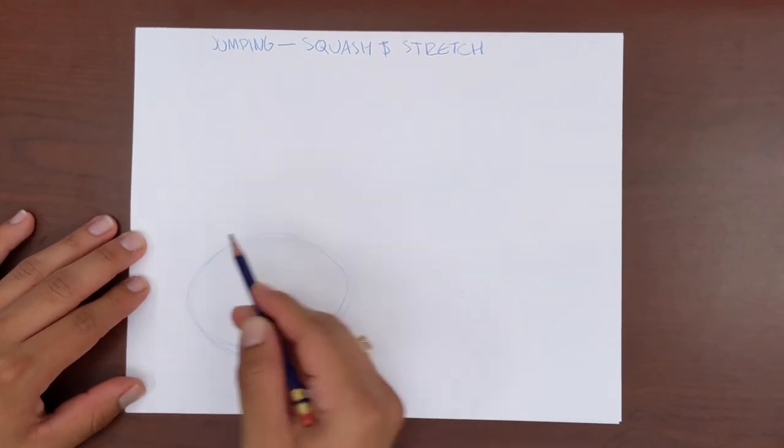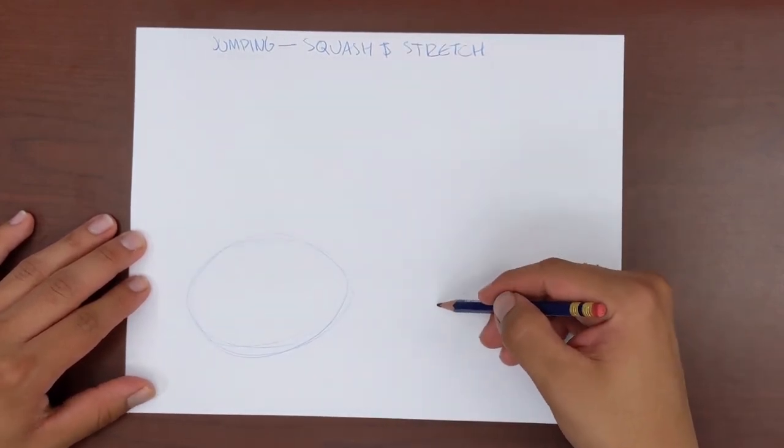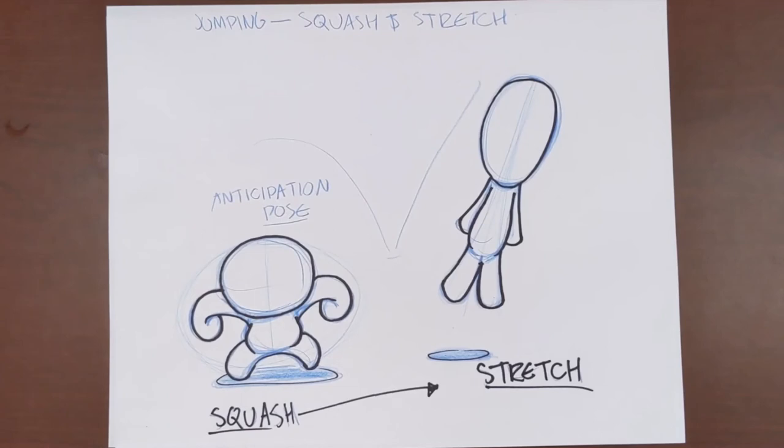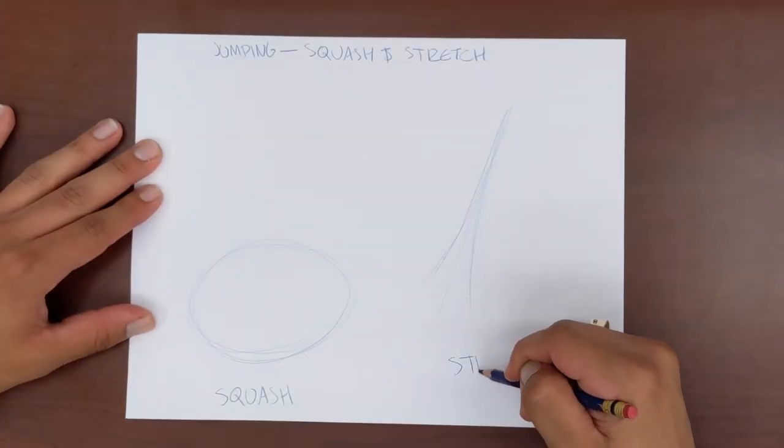The jumping motion is made up of a couple poses. Our squash pose is made to anticipate our stretch pose. What this means is that by drawing our character in a squash pose positioned like they are crouching down, we are drawing them building up the energy to jump and this pose anticipates that a jump is bound to follow.